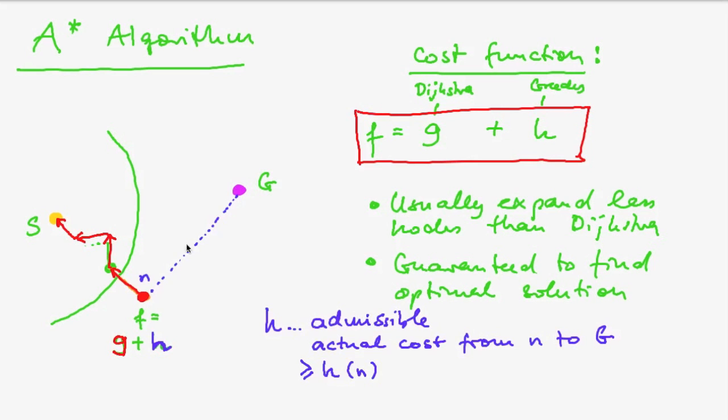And therefore, the direct line distance is a useful admissible estimate, because the direct line is always shorter or equal to the real distance between n and g. But you can find such an estimate for the remaining cost to the goal for other applications as well.